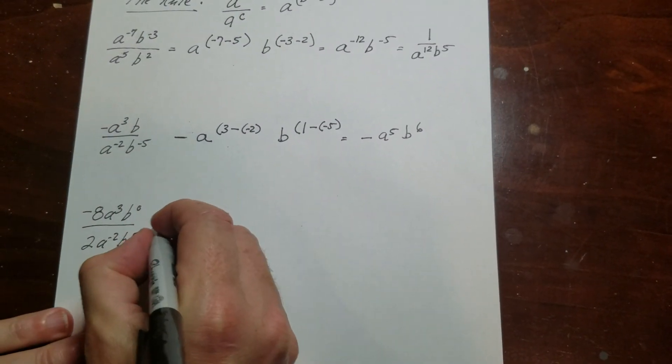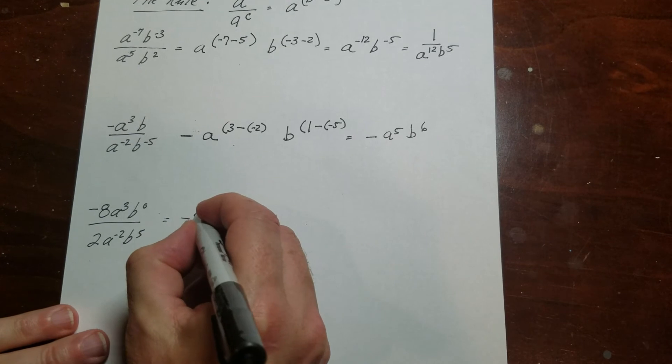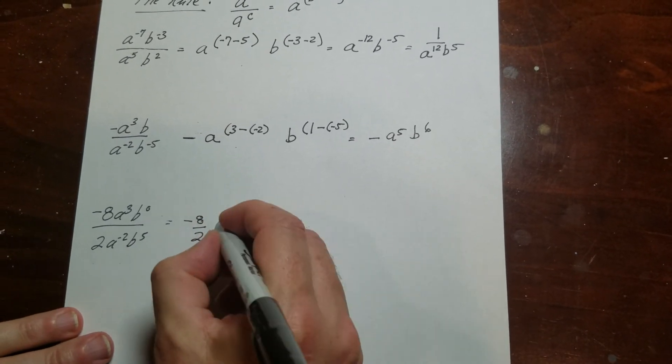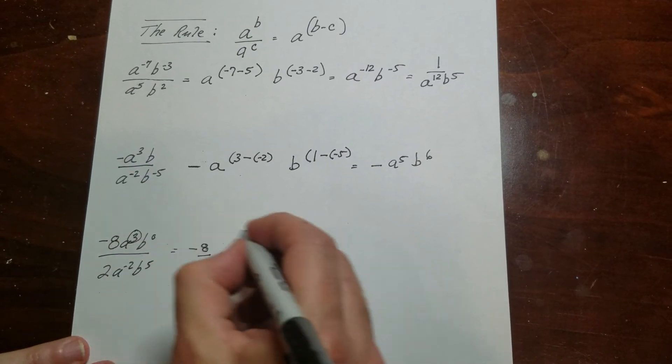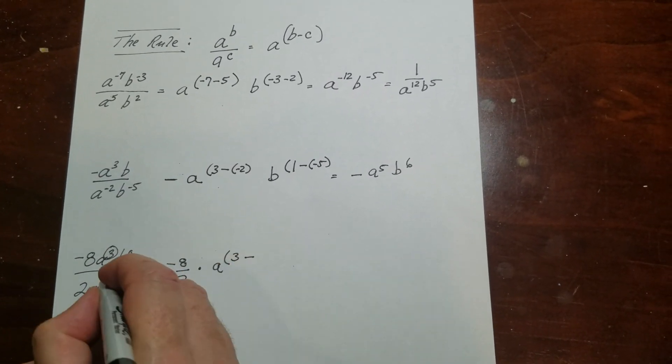This one right here, I've got negative 8 over 2, so I always write that as a fraction. And then I've got the a to the 3, minus negative 2.